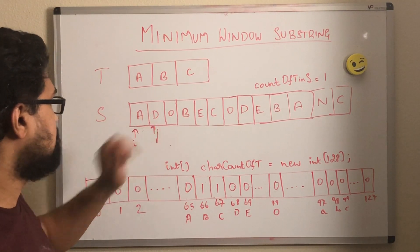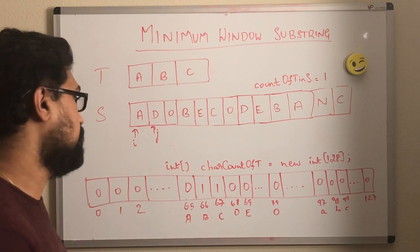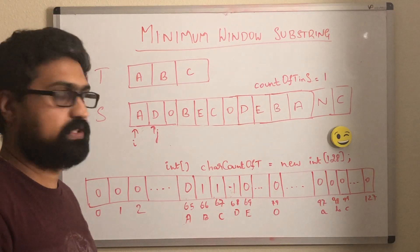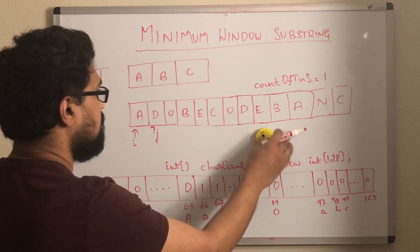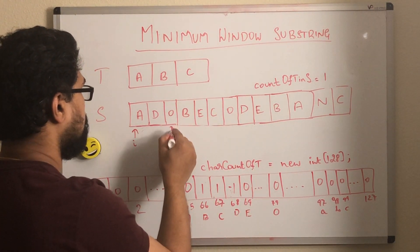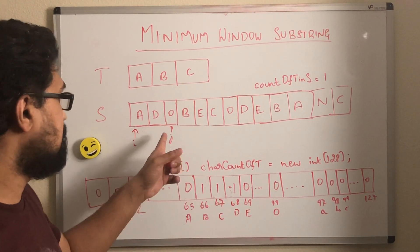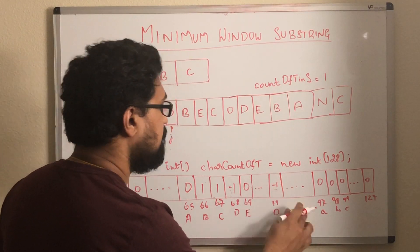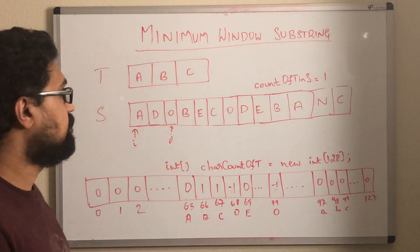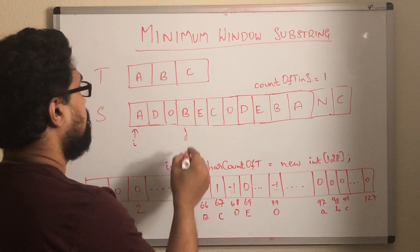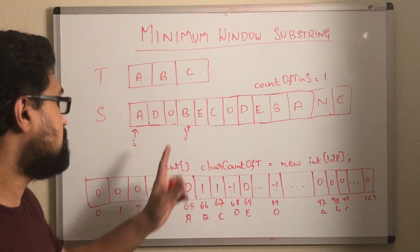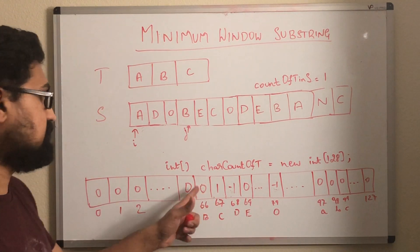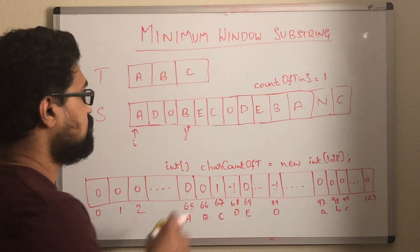Now this index moves by 1. The character pointed by j is d. So let's decrement the value of d in this character count array. Here d is minus 1. This is not greater than or equal to 0, meaning this is a character that is not seen in t. Now let's update j again. The character is o. So let's decrement the value of o. This is minus 1, so this character is not seen in t. Now let's update j again. The character is b. Let's decrement the value of b in this character count array. Now this is 0, which is greater than or equal to 0. That means this is a character that is seen in t. So let's update this count.